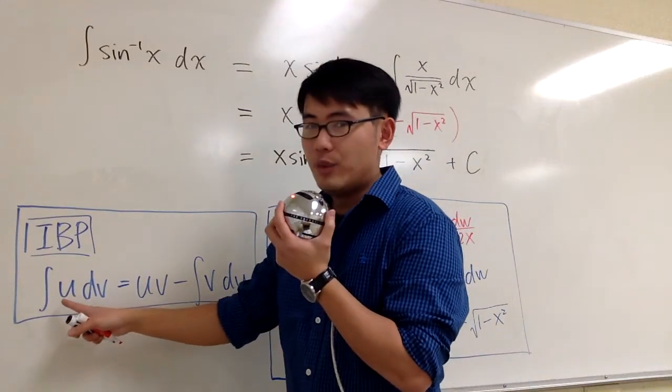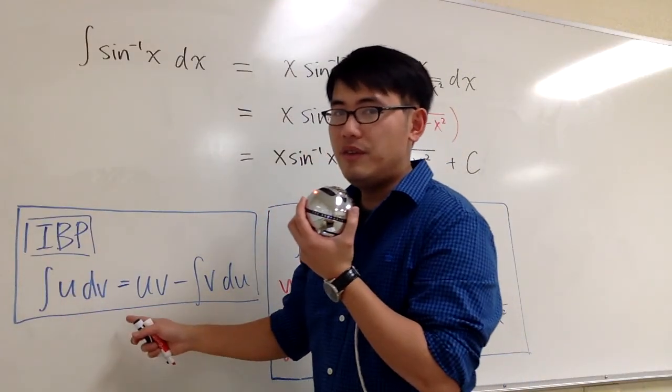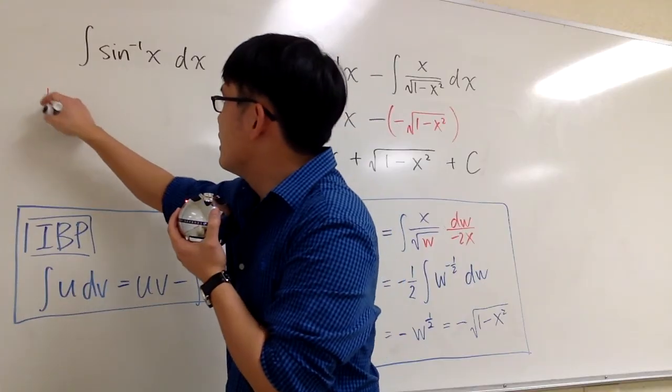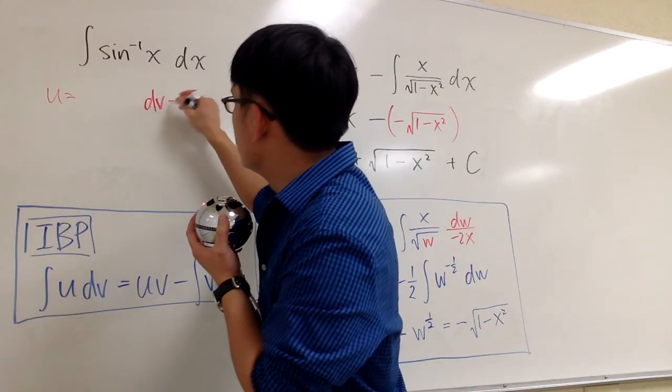For integration by parts, once again we have to choose something for u, and then something for dv. So let's just get this ready, something for u, and something for dv.